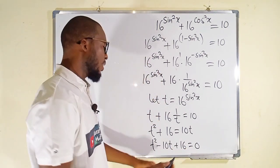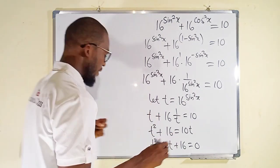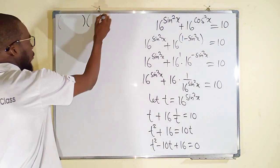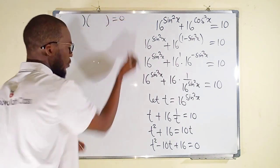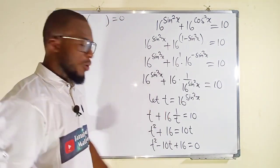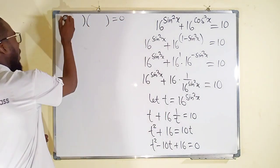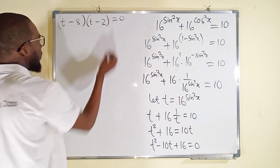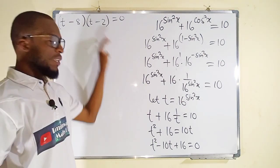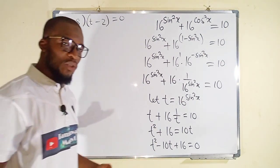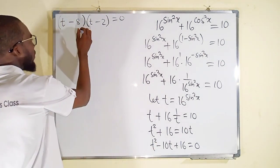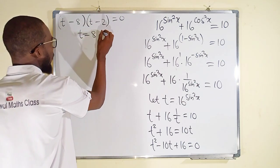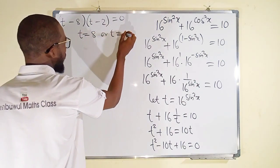This is a quadratic equation that we need to solve for t. By factorization, we think of two numbers which when multiplied together give 16, and when added together give negative 10. The numbers are negative 8 and negative 2. Setting each factor equal to 0, t is equal to 8 or t is equal to 2.